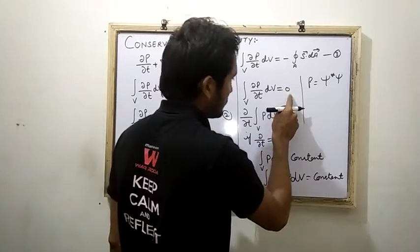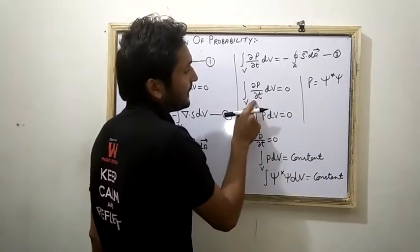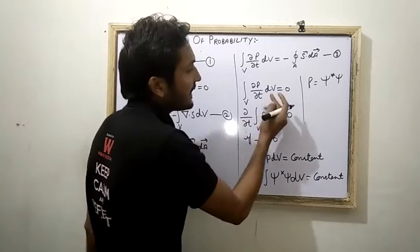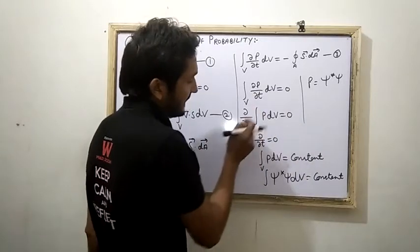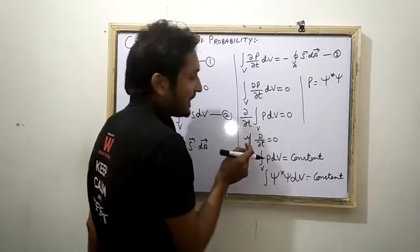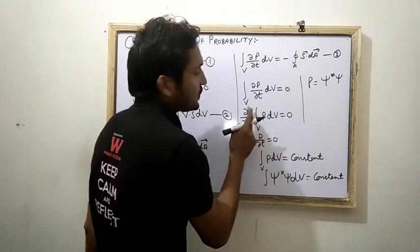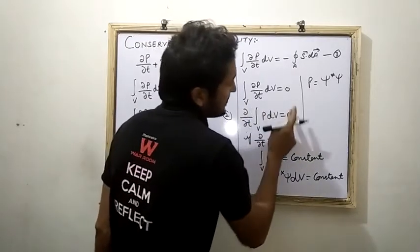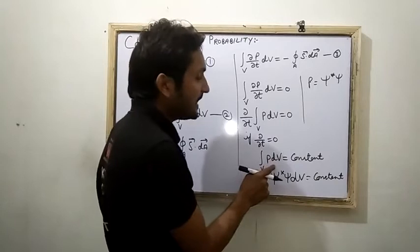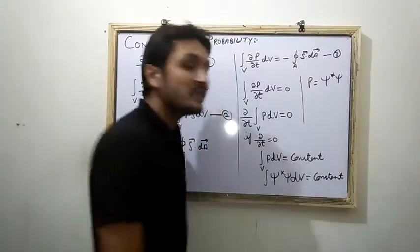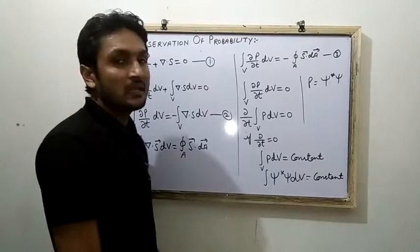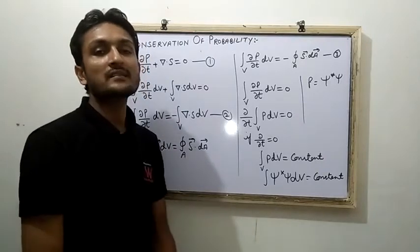We can write this term as zero. Therefore, del p upon del t dv equals zero. If this is zero, the integral must be constant. So we can write: integral of p dv equals constant. This is known as the conservation of probability for a particle system.